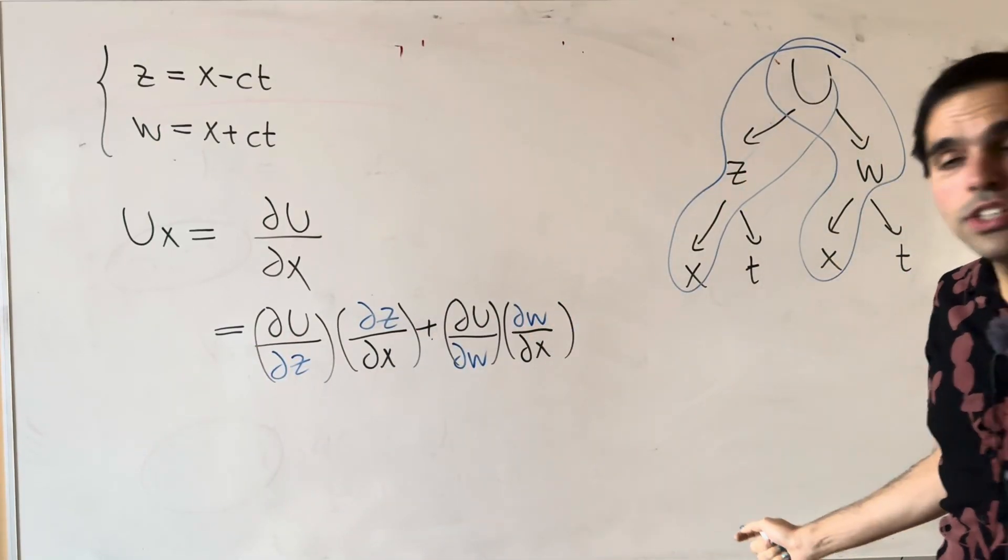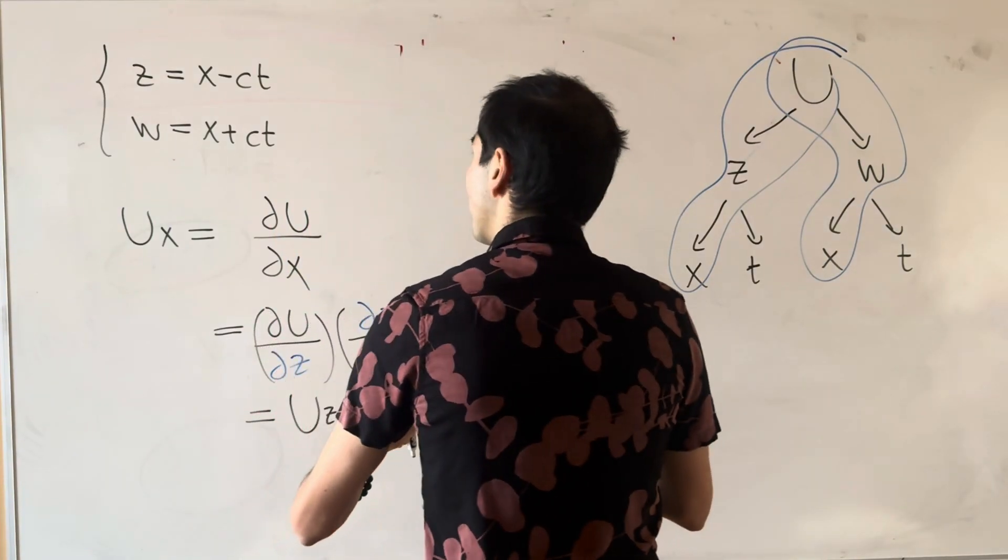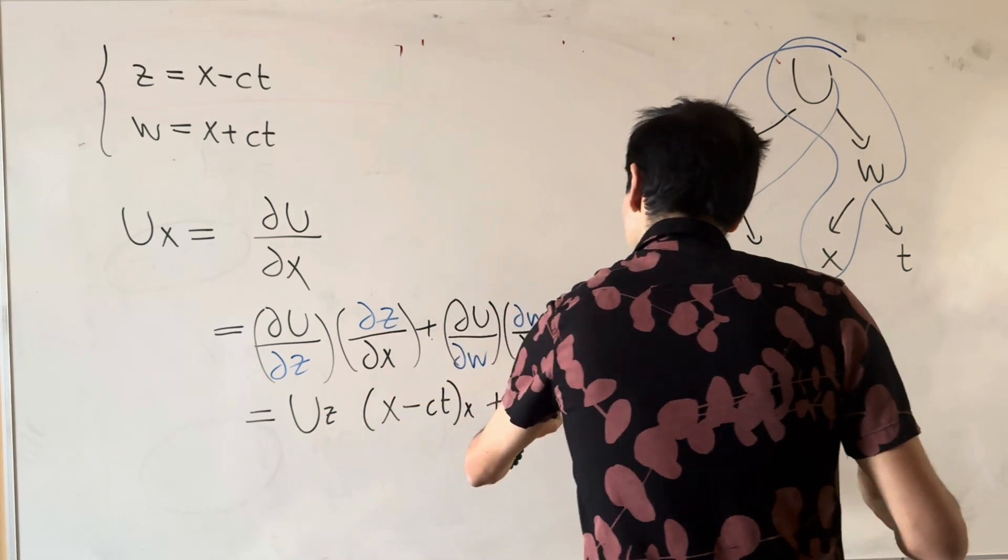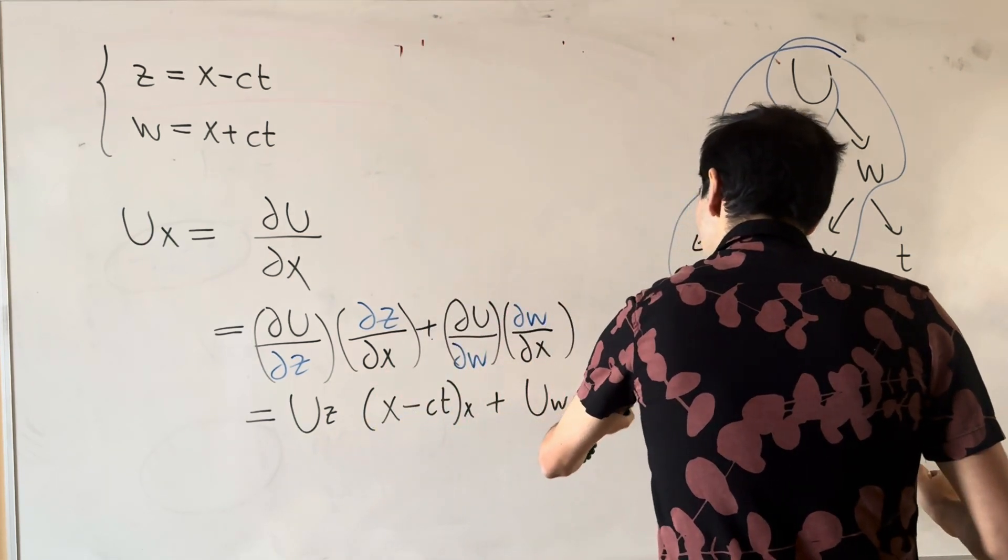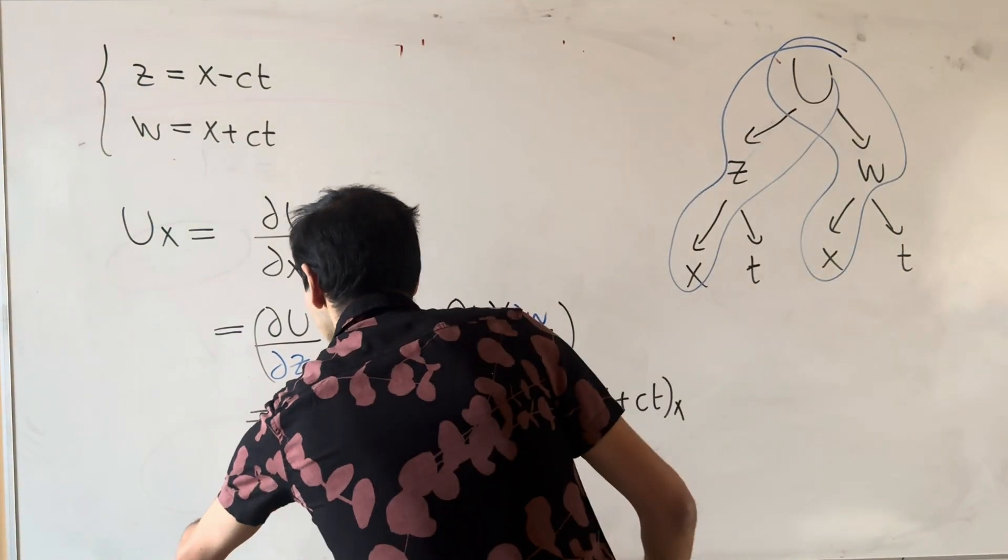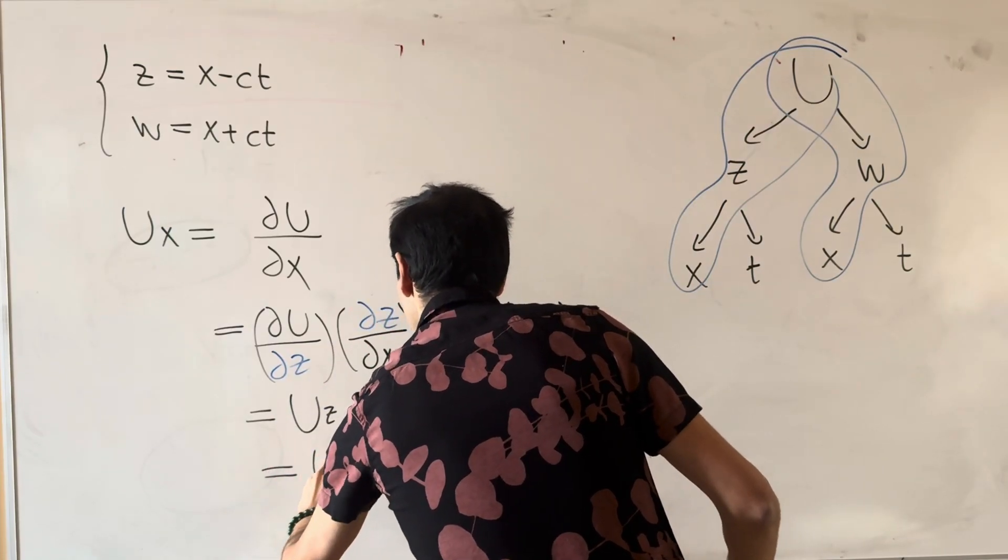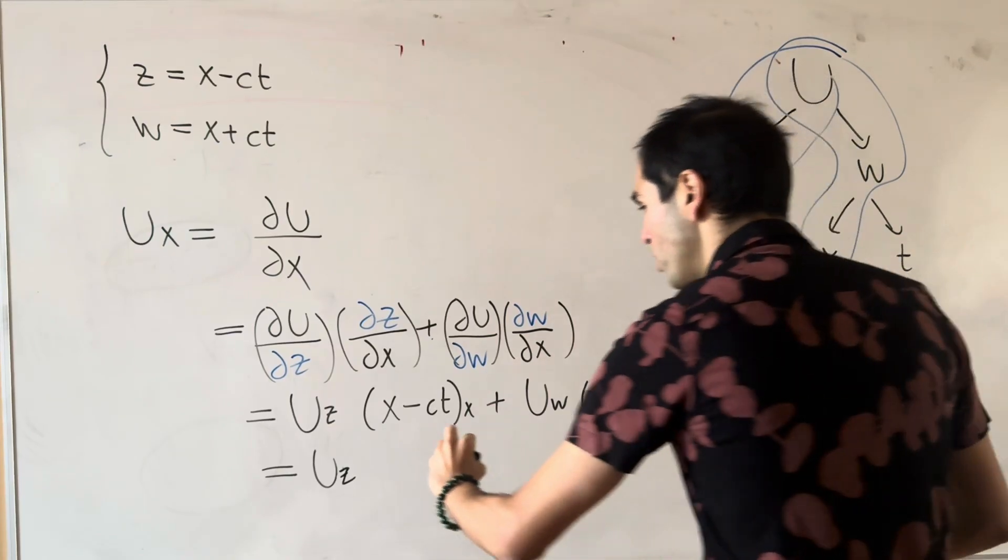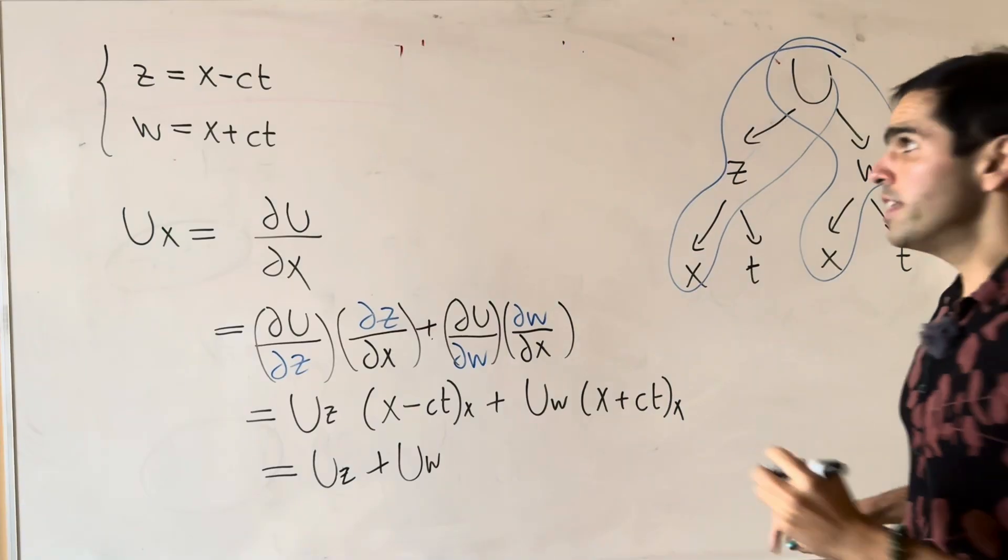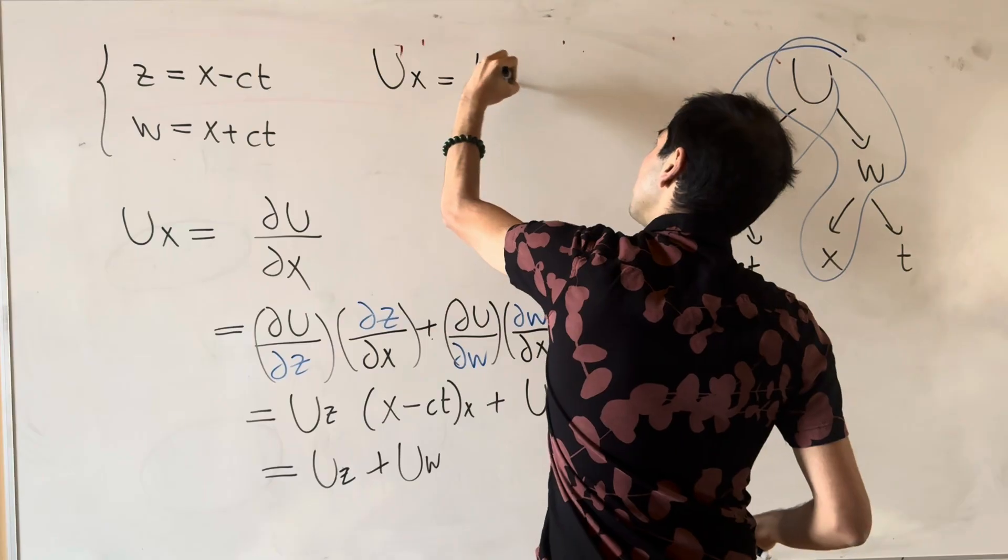And now du over dz, it's U_z. Dz over dx, so it's x minus ct with respect to x. This becomes U_w, and then x plus ct with respect to x. So in the end, we're just left with U_z times 1 plus U_w times 1, so just U_z plus U_w. So let's keep that in mind. U_x is in fact U_z plus U_w.